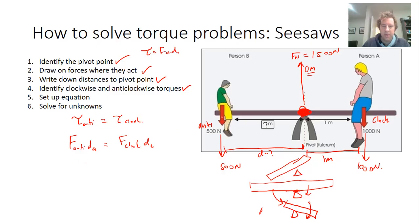Now I just put the numbers in. My anti-clockwise force is 500 newtons times the distance. I don't know what that distance is, so I just put D. Equals my clockwise, 1000 newtons times, and I know that distance, one meter.